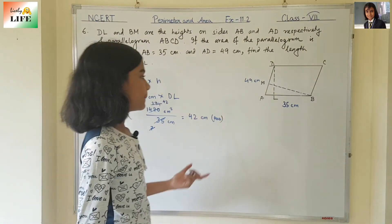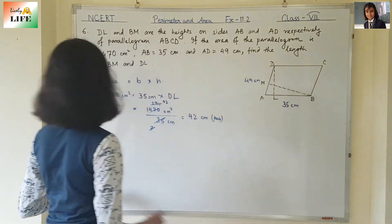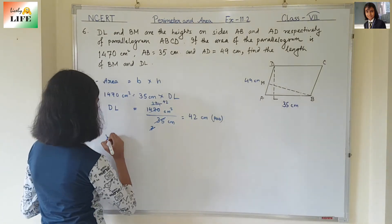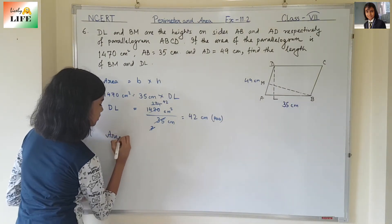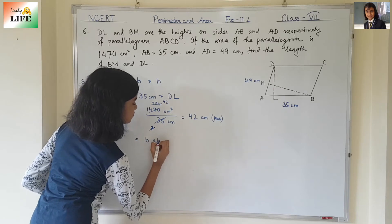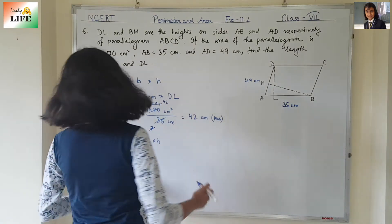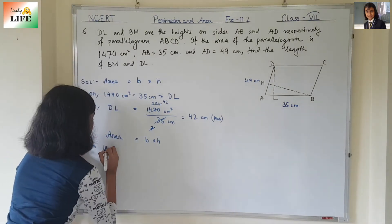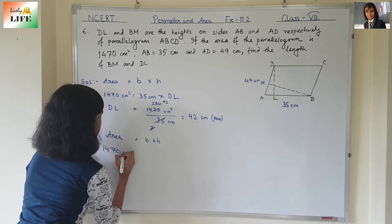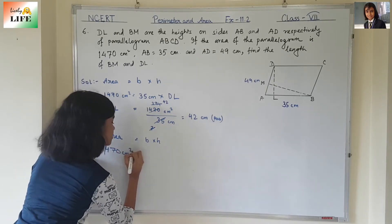Now, let's find BM. Again, area is equal to base into height. What is the area? It is 1470 cm squared.